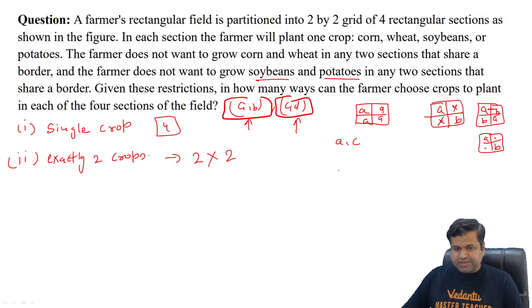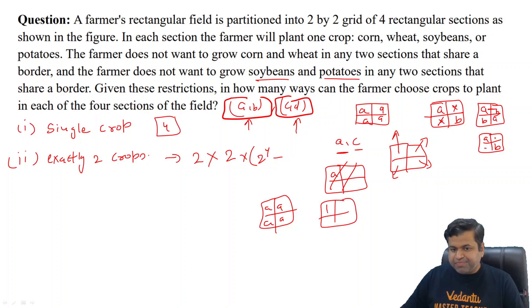Exactly two crops is possible if one crop is from A and B and the other one is from C and D. There are two ways of selecting one crop from A and B and two ways of selecting one crop from C and D. Let's say we are having two crops A and C. They do not have any problem with each other, so there are four squares and every square has two options: two, two, two, two. So 2 raised to the power 4. But let's exclude those two ways when either only A crop has been planted or only C crop has been planted. So 2 to the power 4 minus 2, this is 4 times 14, this is equal to 56.